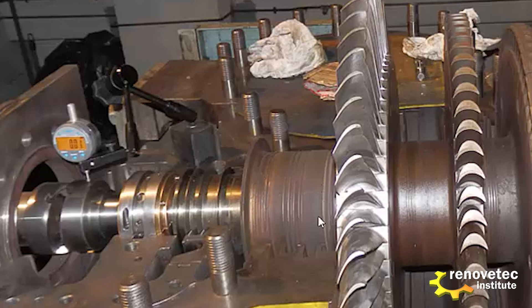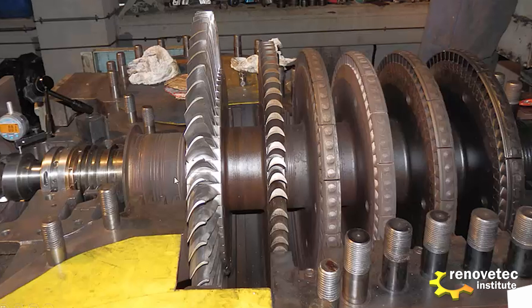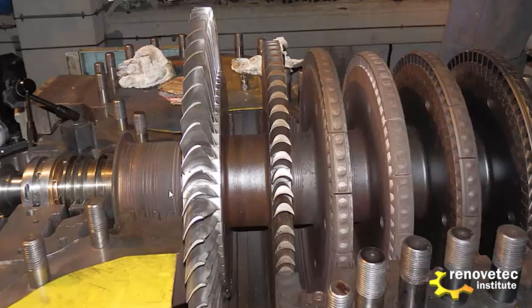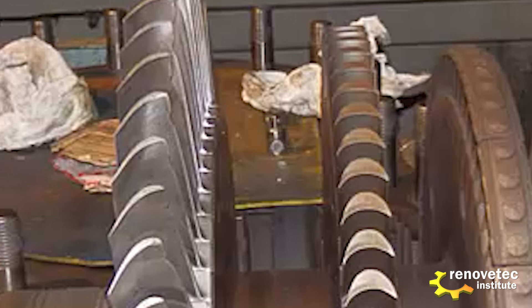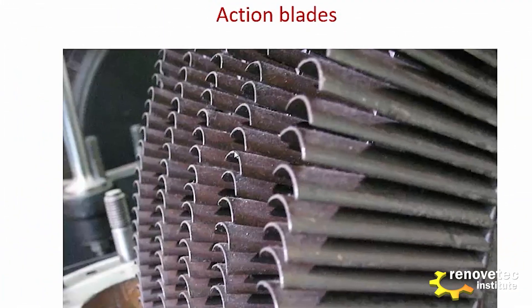The last row of blades is the most delicate part of a steam turbine. In this picture we can see that the blades are damaged — we can recognize a very common damage provoked by the inlet of drops of water. This is an action turbine. The typical shape of the action blades is because the steam pushes and impulses the blades.